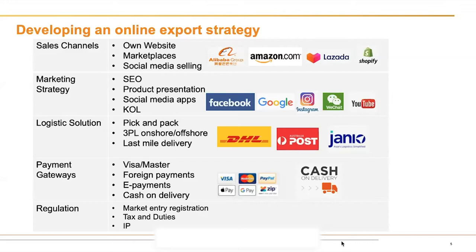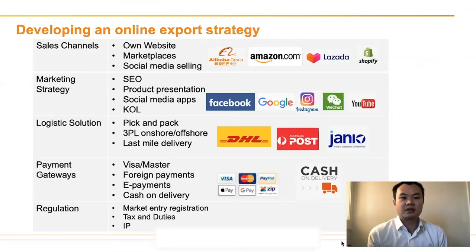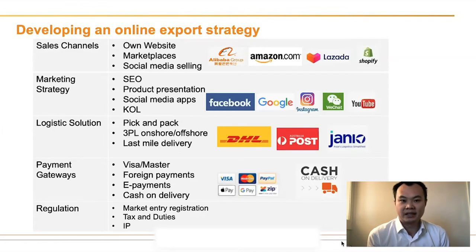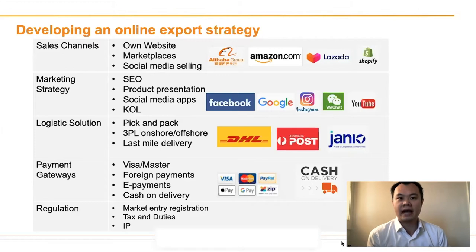Obviously the real world is a lot more complicated than this table, but I hope these five topics can help you get started. The first topic is sales channels — basically, where do you want to put your products. There are three major ways to list your products online: setting up your own website, listing on a marketplace in the local market, or social media selling. Setting up your own website, like www.mybrand.com, is a good way to have your own store and tailor it the way you want.